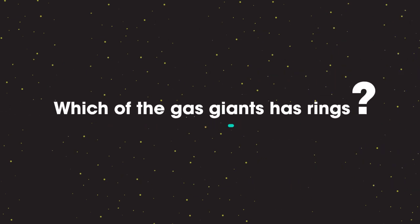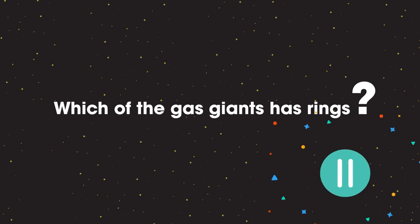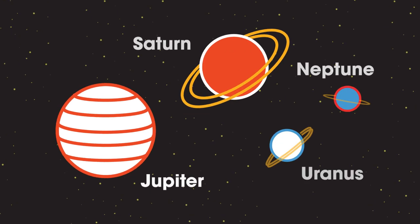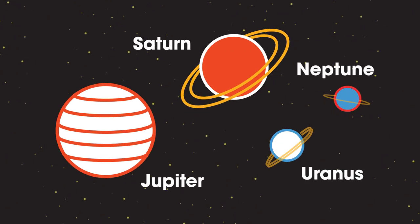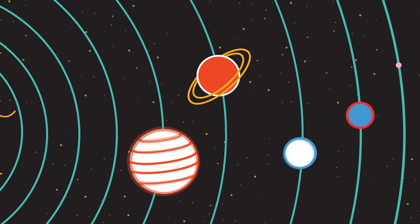Which of the gas giants has rings? Pause the video while you think of an answer. The answer is that all four of them have rings, but only those of Saturn are visible from the Earth.